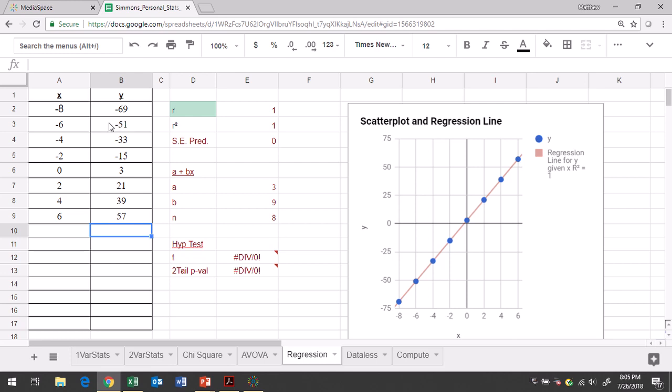Alright, so the only thing we need out of here is going to be the equation itself. This A plus Bx region, this is where the equation is given to us. A is the constant term and B is called the coefficient, the number that goes in front of the variable x. So A is 3, B is 9.